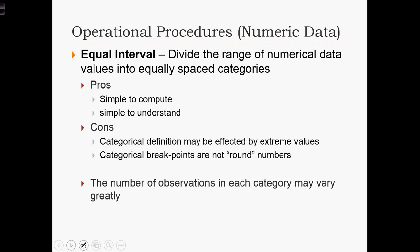The pros of this method are that it's very easy to compute and quite simple to understand. But the cons are that the categorical definitions might be affected by extreme values and that the breakpoints in the categories aren't necessarily round numbers. Another characteristic of equal interval breaks is that the number of observations in each category might vary greatly. You might have one category with very few observations and another category with a lot of observations.